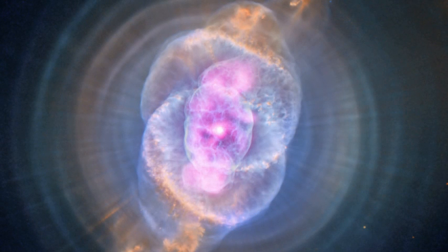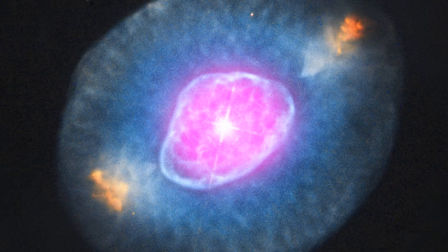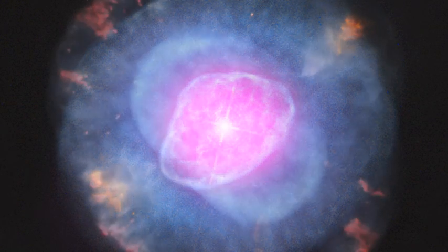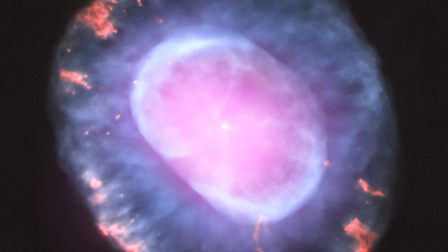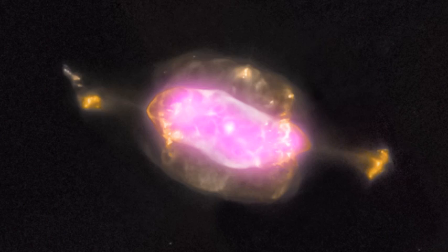These gassy envelopes come in many shapes and sizes. In these pictures, you can see the material has formed two symmetrical clouds, which spread out on either side of the star. They look just like the wings of a butterfly.